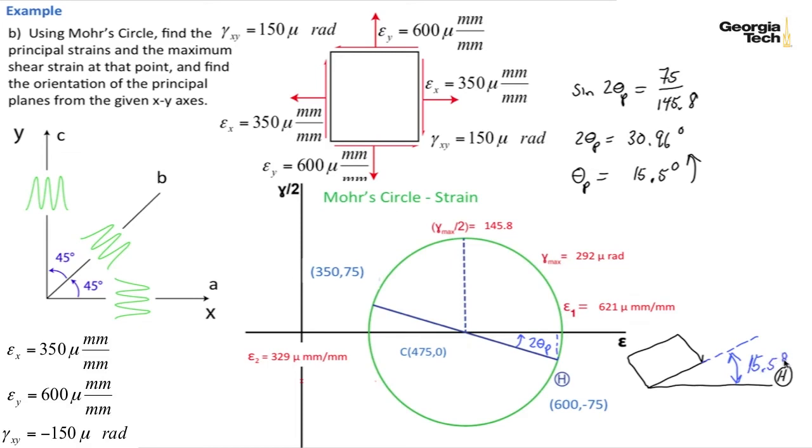And on that face we're going to have epsilon sub 1. Our principal strain, principal normal strain is 621 mu millimeters per millimeter. It's positive so it's going to be in tension. So this is 621 mu millimeters per millimeters.